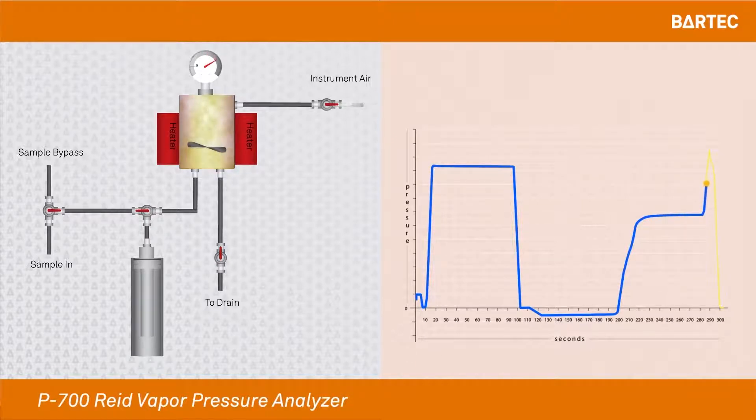Once the sample is loaded, we start the agitation to release the vapors of the sample and reach the RVP. Once the RVP is reached, it is recorded by the pressure gauge and the electronics and the cycle is finished. We purge the measurement cell and get ready for the following analysis.